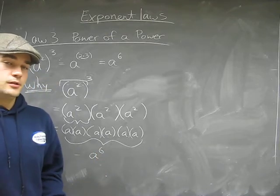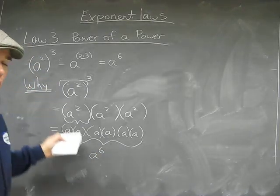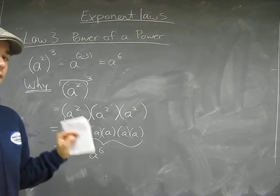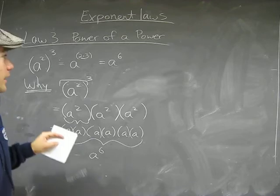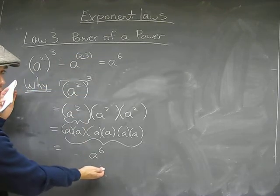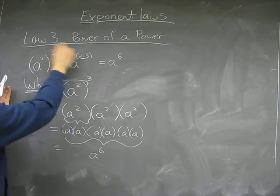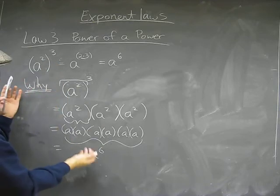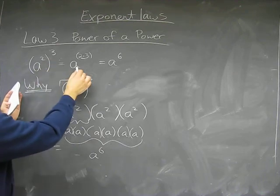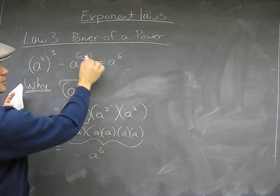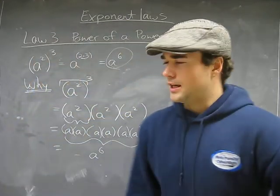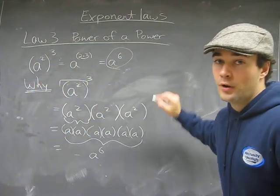You have the choice to do it this long way, which is correct, or you can do it the short, fast, efficient, math-smart way, which is by learning the law. Now you know why the power of exponents works. You're going to commit this law to memory because you understand it: A to the power of 2, to the power of 3, is the same as A to the 2 times 3, which equals A to the 6th. Look how much time we save. But now you know why.